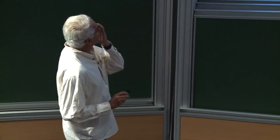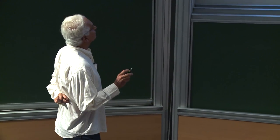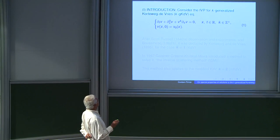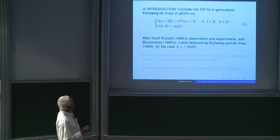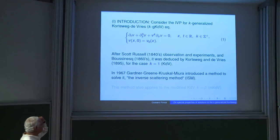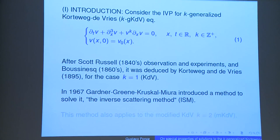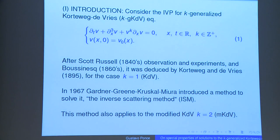The KdV with power 1 was first deduced by Korteweg-de Vries, or Boussinesq, more than a hundred years ago. Later it became very famous because it was the first model proved to be completely integrable — a result of Gardner, Green, Kruskal, and Miura. This method applies also for k=2, as the previous speaker mentioned.